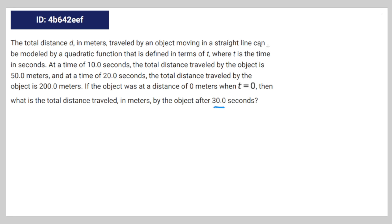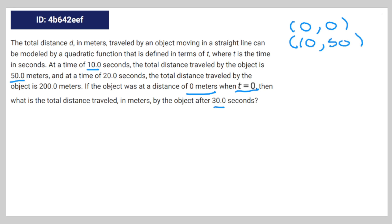We're given three coordinates here. t equals zero gives us zero meters, so that's the point (0, 0). At t equals 10 we have 50 meters, so that's (10, 50). And at t equals 20 we have 200 meters, so that's (20, 200).